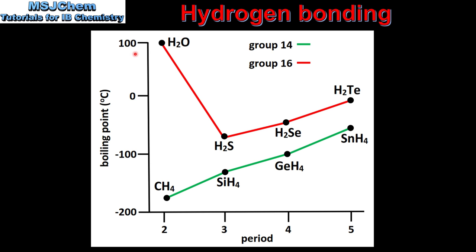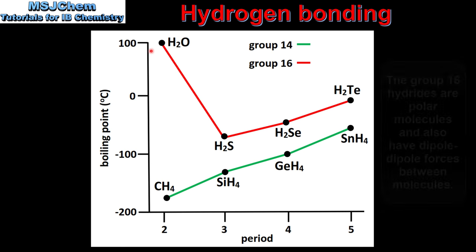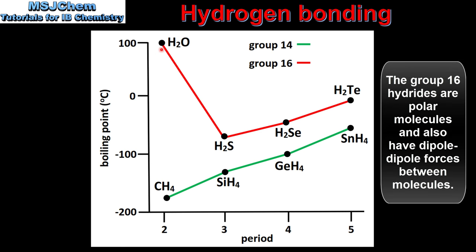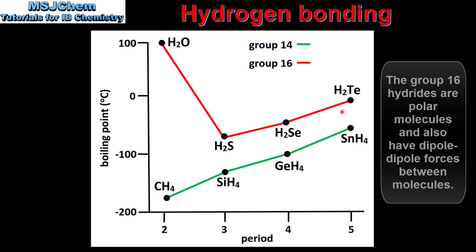In this graph we can compare the boiling points of the Group 14 and Group 16 hydrides. Starting with Group 16, H₂O has a much higher boiling point compared to the other Group 16 hydrides. This big difference is due to H₂O being able to form hydrogen bonds between its molecules. The increasing boiling point between H₂S and H₂Te is due to the increase in molar mass, which results in stronger London dispersion forces and an increase in boiling point.